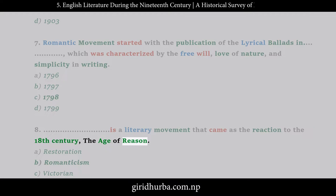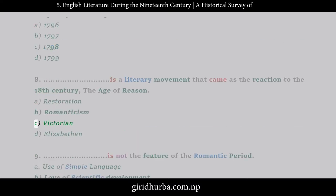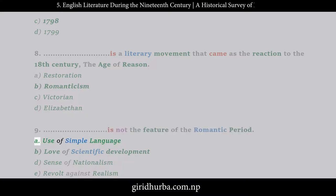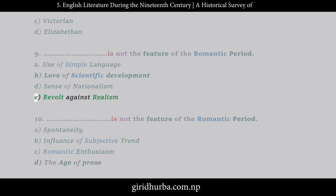Question 8: __ is a literary movement that came as the reaction to the 18th century, the age of reason. A. Restoration, B. Romanticism, C. Victorian, D. Elizabethan. Question 9: __ is not a feature of the Romantic period. A. Use of simple language, B. Love of scientific development, C. Sense of nationalism, D. Revolt against realism.